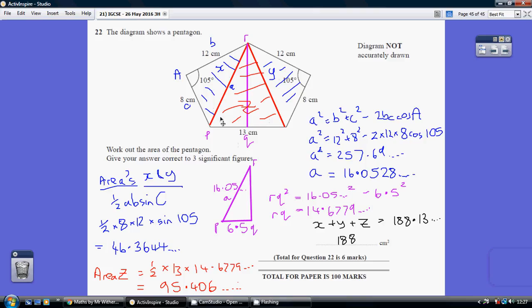So I've got non-right angled triangles here, but I do know the trapped angle and the sides either side of it. So the area of a triangle is given in the formula sheet at the front. It's half A, B, sin C, where my angle C is my 105 and my two trapped angle sides are A and B, are the 12 and the 8.